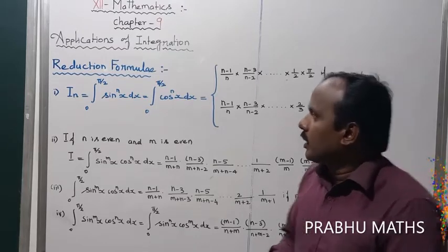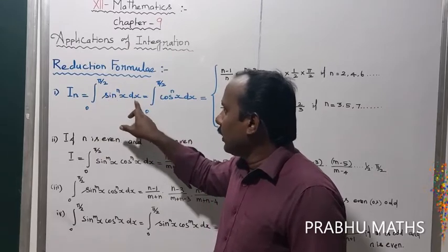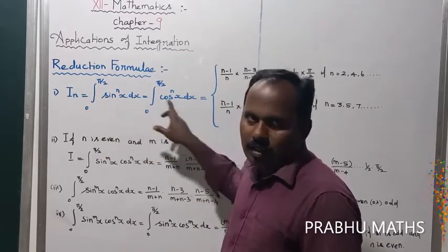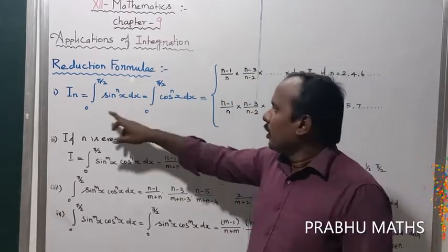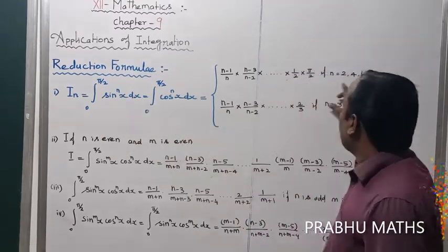First, I is equal to integral 0 to π/2 sin power n x dx. Suppose sin θ or cos θ. Consider that 0 to π/2 sin power n x dx or cos power n x dx. The given value is going to be odd number or even number.